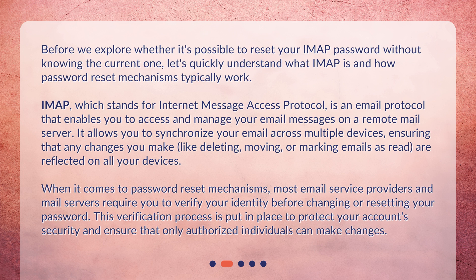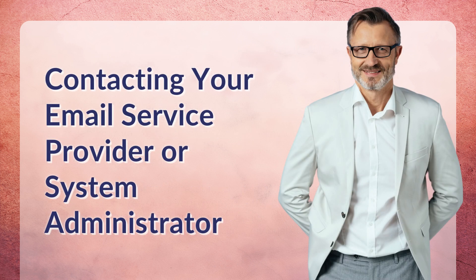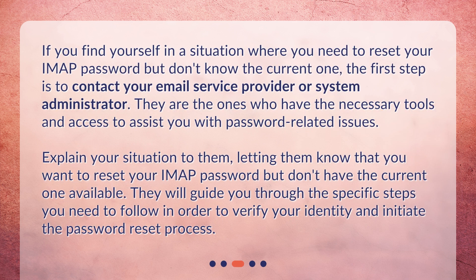When it comes to password reset mechanisms, most email service providers and mail servers require you to verify your identity before changing or resetting your password. This verification process is put in place to protect your account's security and ensure that only authorized individuals can make changes. If you find yourself needing to reset your IMAP password but don't know the current one, the first step is to contact your email service provider or system administrator. They have the necessary tools and access to assist you with password-related issues. Explain your situation, letting them know you want to reset your IMAP password but don't have the current one available, and they will guide you through the steps to verify your identity and initiate the password reset process.